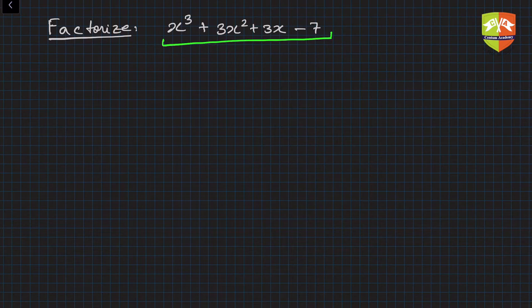We know splitting the middle term, we know how to take commons, we know how to use algebraic identities. So can something be used here? Now if you notice there are two threes here, this 3 and this 3, and there's a cube term.